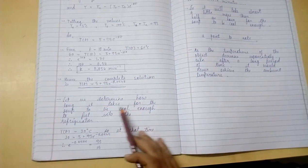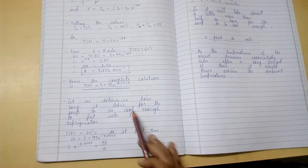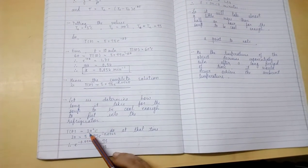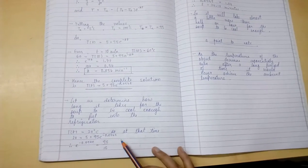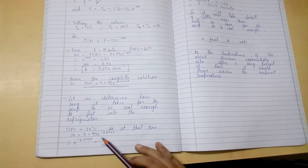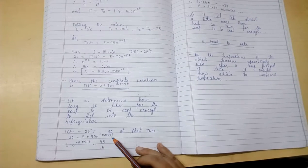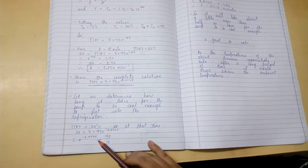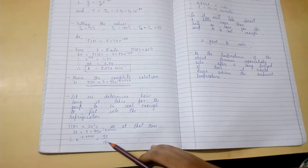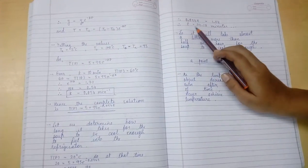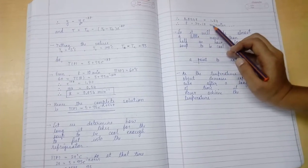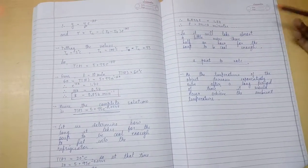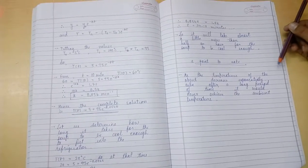Now, let us determine how long it takes for the soup to be cool enough to put into the refrigerator. T(t) is equal to 20 degrees centigrade. So, at that time, 20 is equal to 5 plus 95 e raised to minus 0.054 t. Therefore, e raised to minus 0.054 t is equal to 15 by 95. Hence, we get t is equal to 34.18 minutes. So, it will take almost a little more than half an hour for the soup to be cool enough.